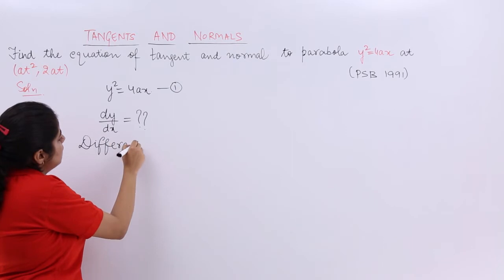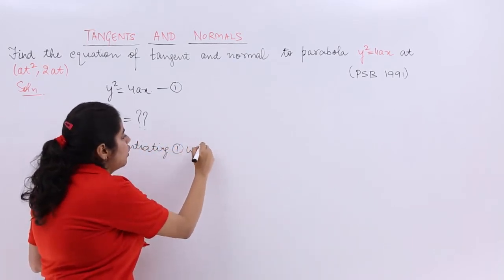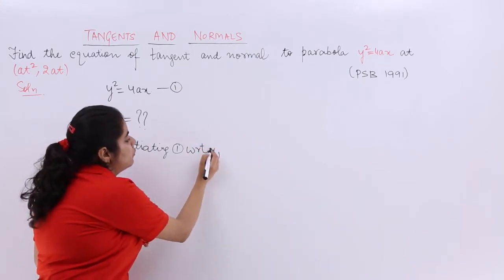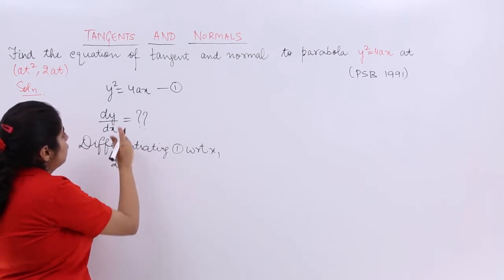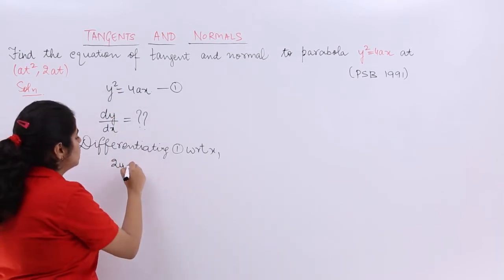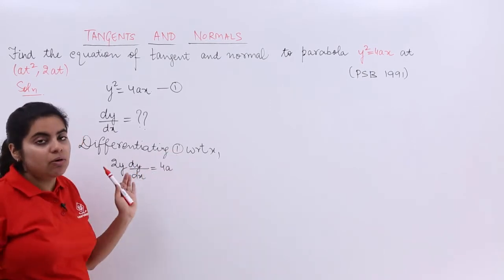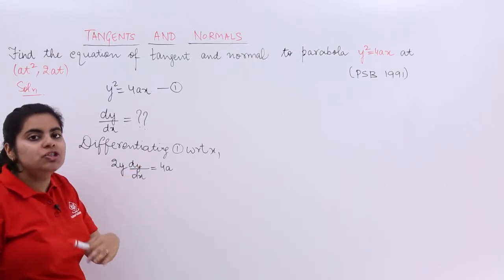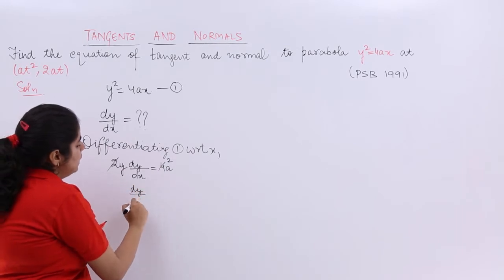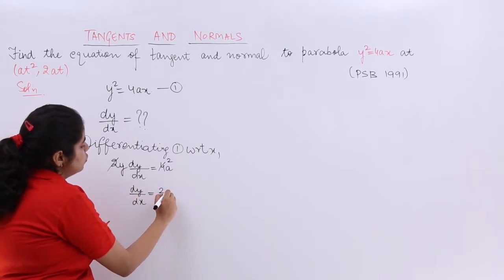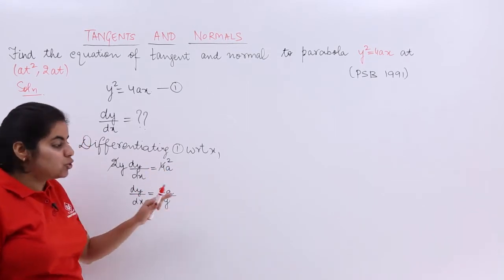Differentiating equation 1 with respect to x, it becomes 2y · (dy/dx) = 4a, by the chain rule, where a is a constant. So dy/dx = 2a/y.